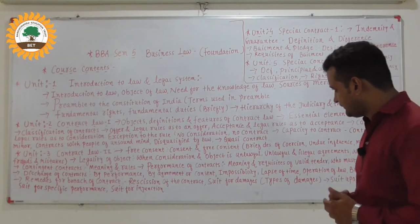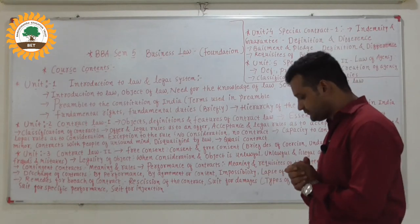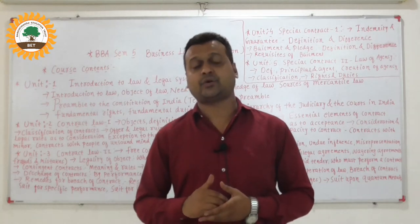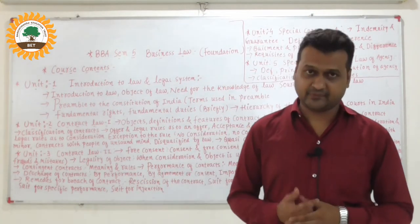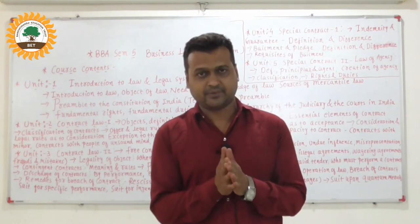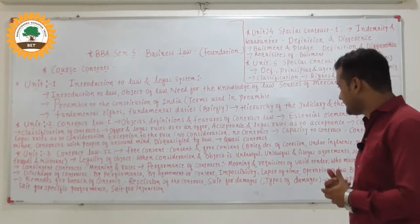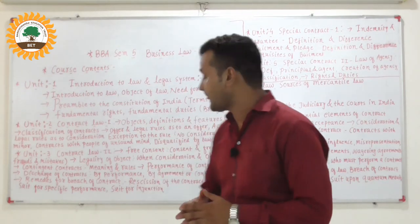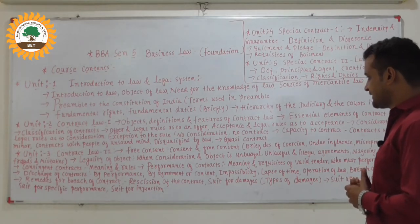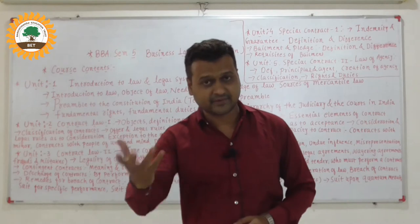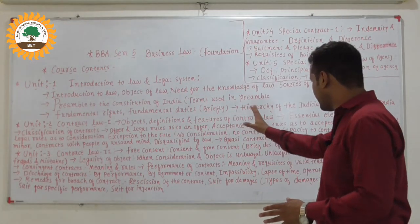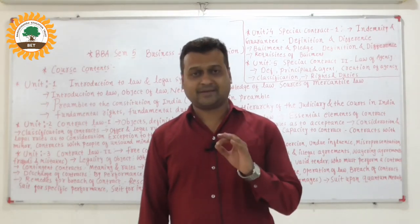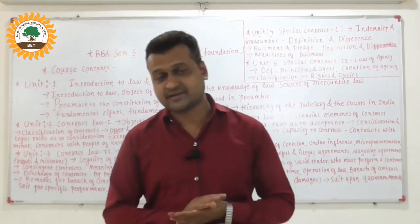Unit 2 is all about Contract Law 1. That covers: definitions and features of contract law, what is a contract, essential elements of a contract — meaning, if you are making a contract with another party, what are the requirements. Then offer and legal rules as to an offer, offer and acceptance, what is an offer, what is acceptance, and the requirements for offer and acceptance. After that, consideration and legal rules as to consideration — what is consideration, what are the rules, and exceptions. No consideration, no contract: without consideration, a contract is not possible. Consideration means something in return.